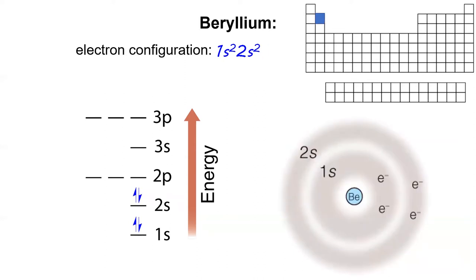Next up, element number 4, beryllium. There's still room in the 2s subshell for another electron, so the fourth electron moves in. The electron configuration for beryllium is 1s² 2s². It has two electrons in both the 1s and the 2s subshells.